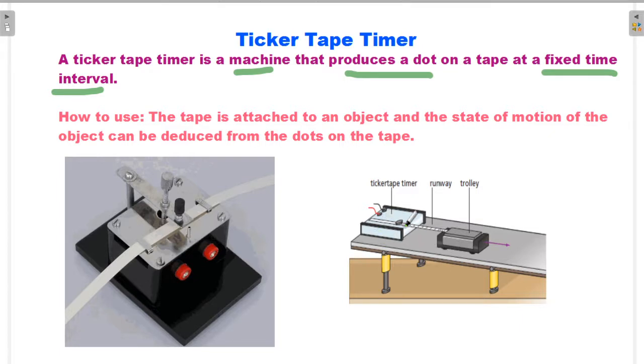How to use: The tape is attached to an object. The state of motion of the object can be deduced from the dots on the tape.